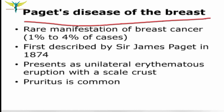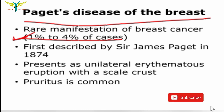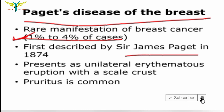Paget's disease of the breast is a rare manifestation of breast cancer, present in up to 1 to 4 percent of cases. It was first described by Sir James Paget in 1874, which is why the disease carries his name. This disease presents as a unilateral erythematous eruption with scaling and crusting formation.